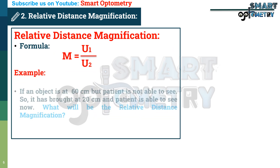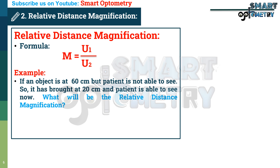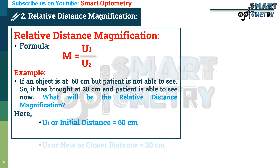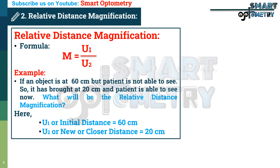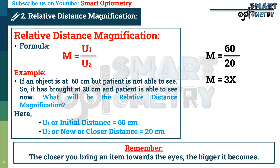For example, if an object is at 60 cm but the patient is not able to see, so it is brought to 20 cm and the patient is able to see. Here, U1 or initial distance equals 60 cm and U2 or new closer distance equals 20 cm, so magnification = 60 divided by 20, or 3x. Remember, the closer you bring an item towards the eyes, the bigger it becomes.